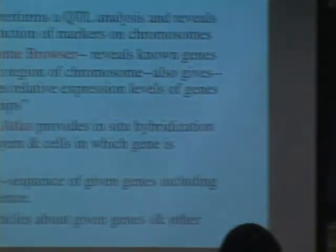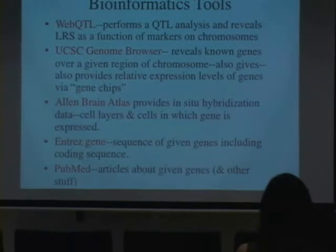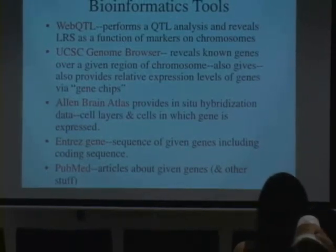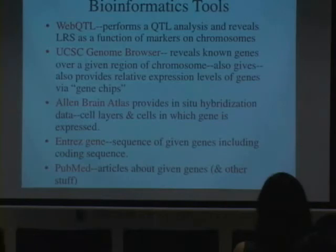To summarize: WebQTL performs the QTL analysis and gives us the likelihood ratio statistic as a function of markers on chromosomes. The UC Santa Cruz genome browser tells us the known genes over a given region of chromosome and gives us the relative expression levels of genes. The Allen Brain Atlas gave us the in situ hybridization data, where you could find out cell layers and cells in which the gene was expressed. Entree Gene gave us the sequence, and PubMed gave us more information. These are all tools people are currently using, and when you get a job in research, you're going to be using these things.